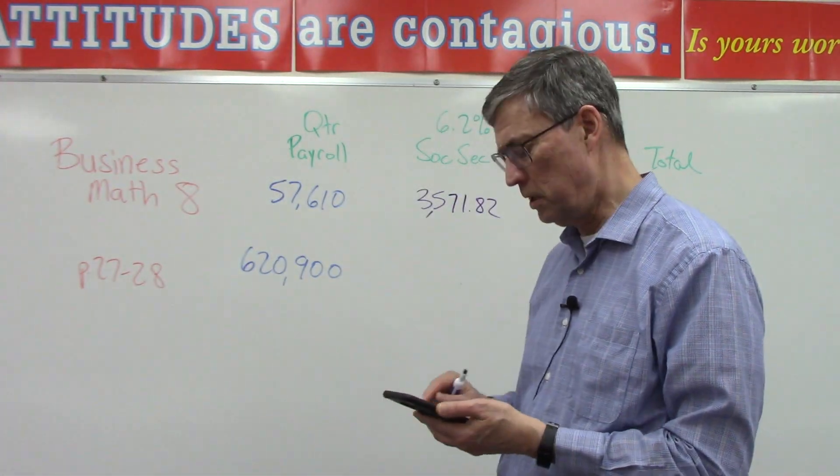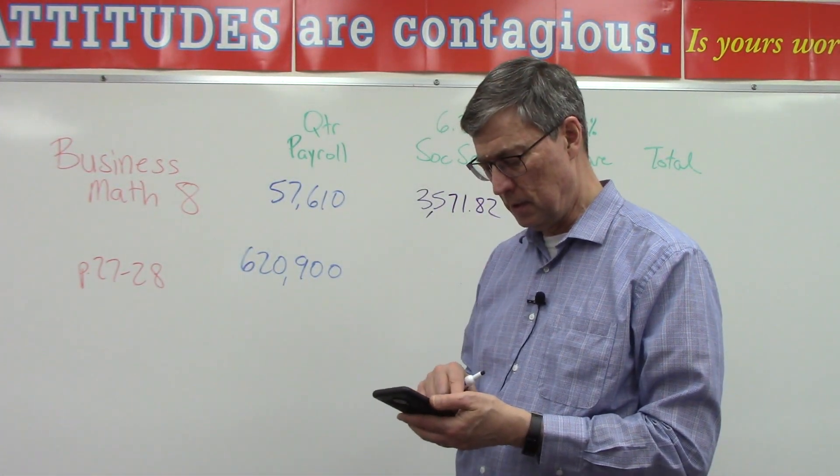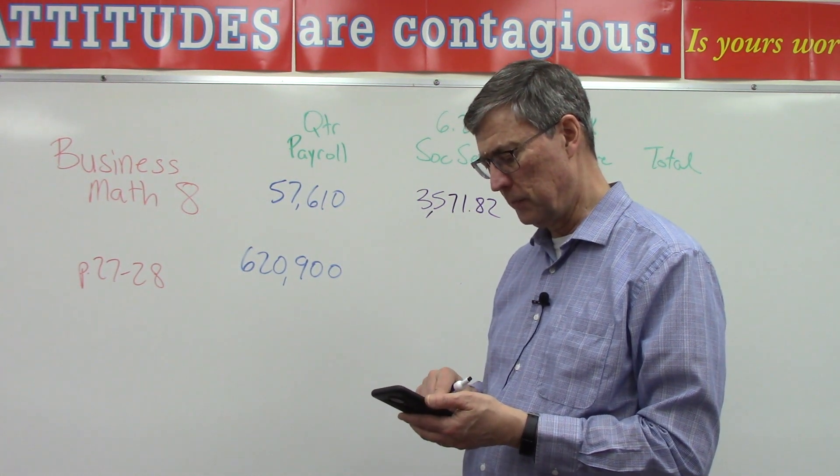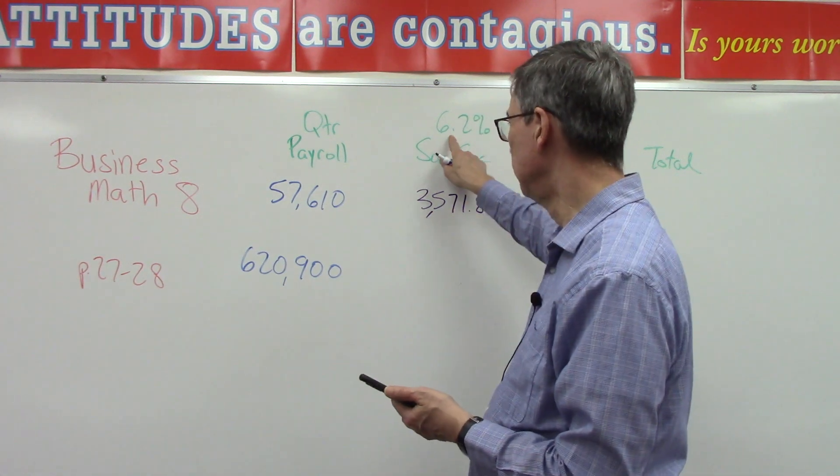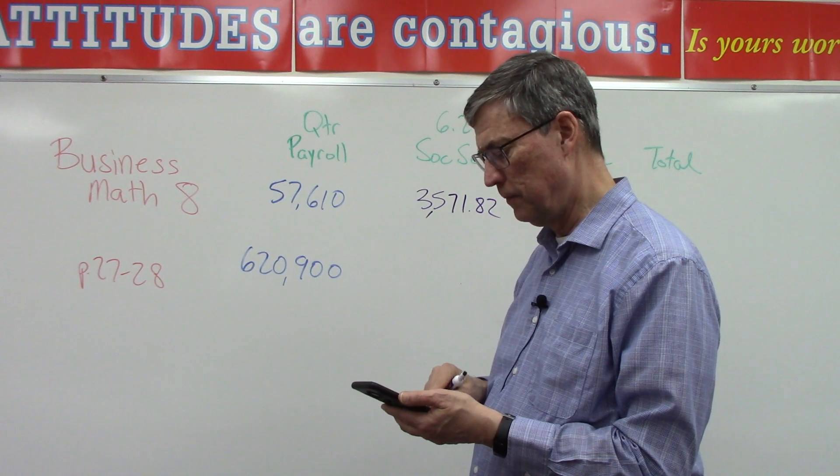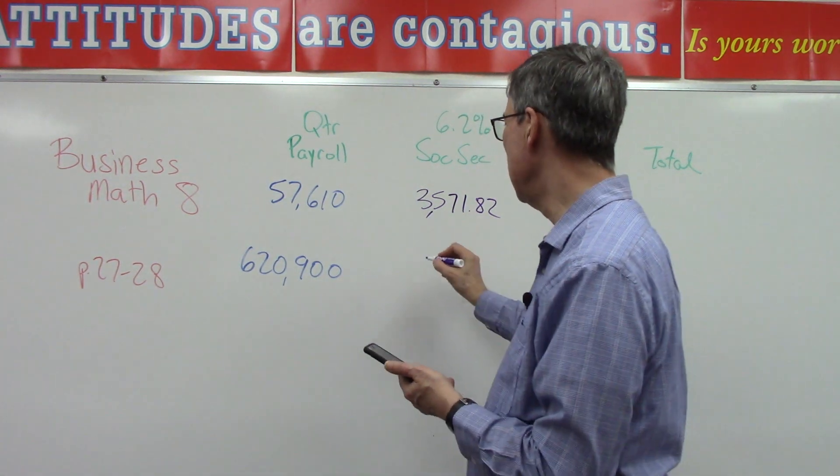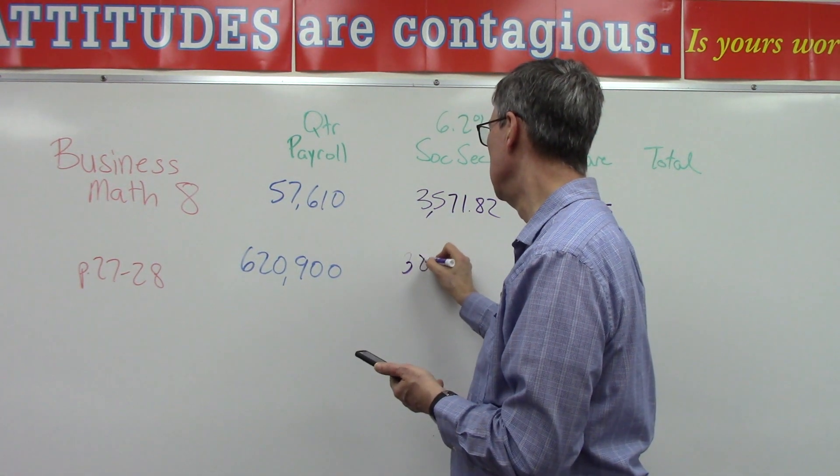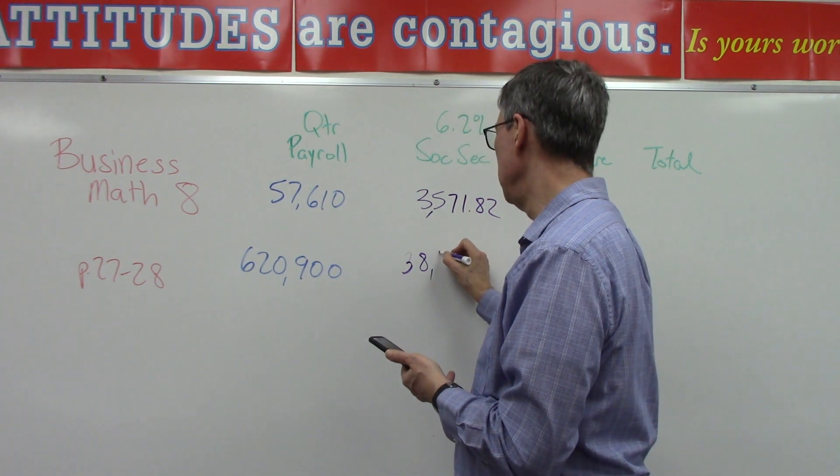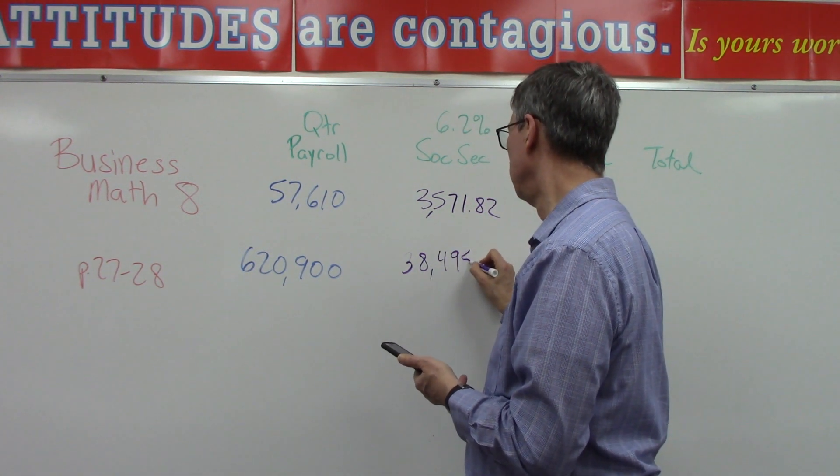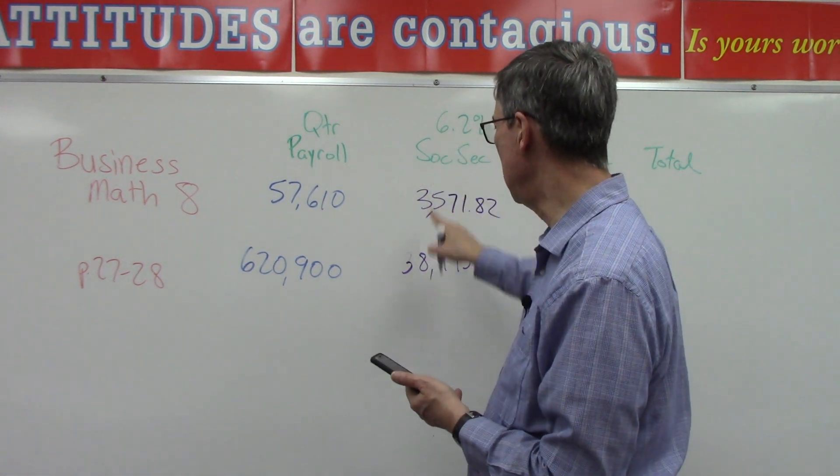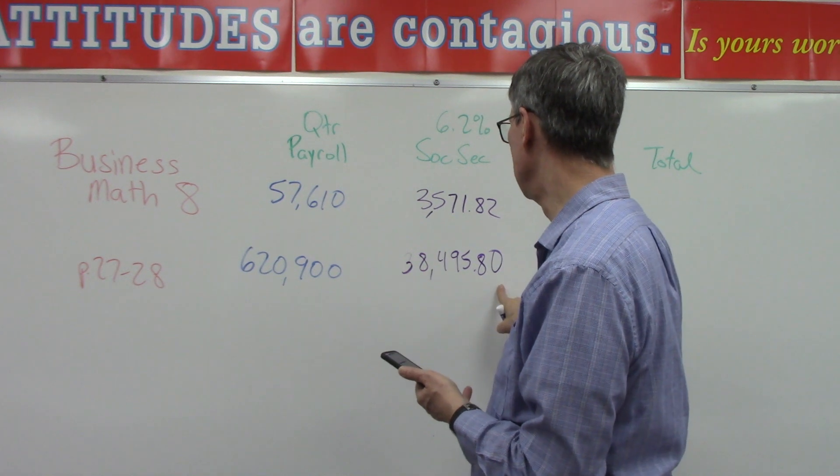Okay, let's walk through one more example together, and we're gonna take this big payroll of $620,900 times 0.062. That's $38,495.80. See if you get that. Okay, do the same math, see if you get that number with your calculator. Don't just take my number.